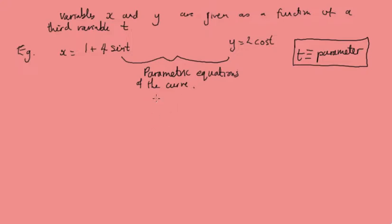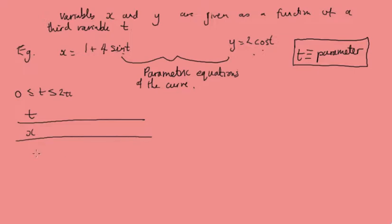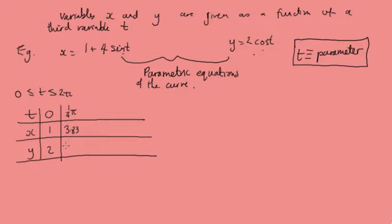To find the curve given by the parametric equations, we would work out values for x and y separately with different values of t. For the example we've got, we're going to deal with these equations in the range between 0 and 2 pi. So let's find some values of x and y. When t is 0, x is going to be 1 and y is going to be 2. When t is a quarter pi, x is going to be 3.83 and y is going to be 1.41.